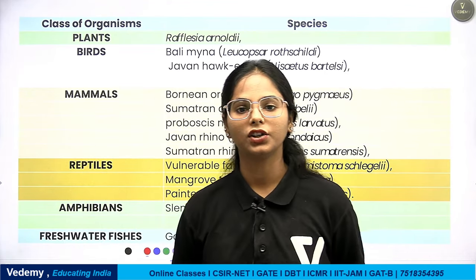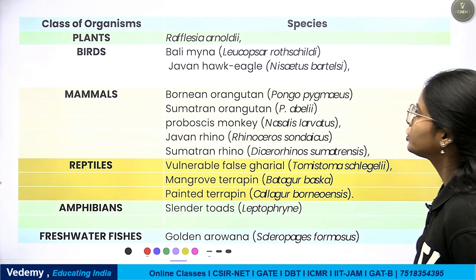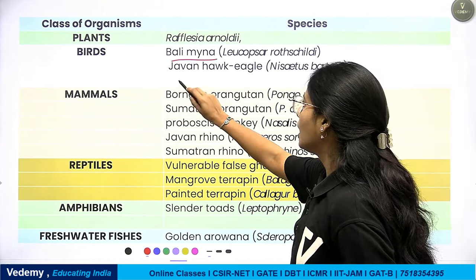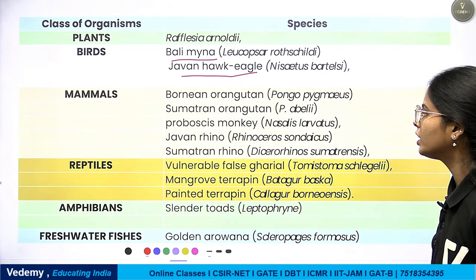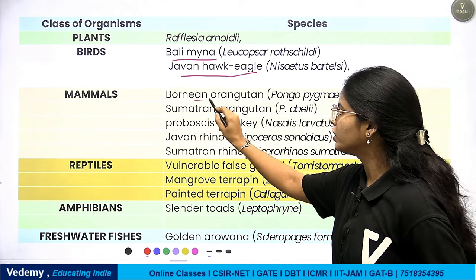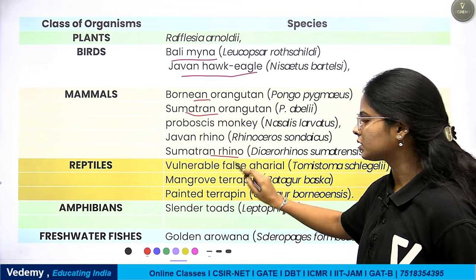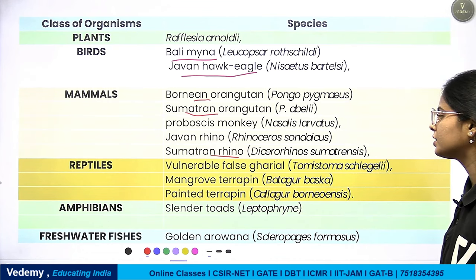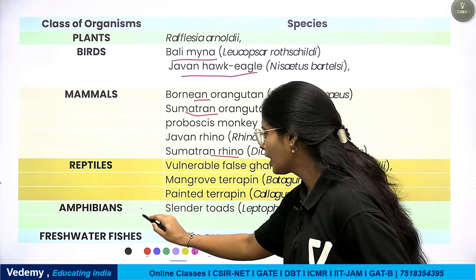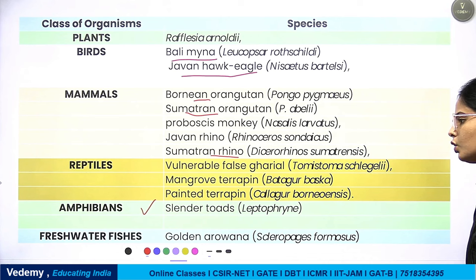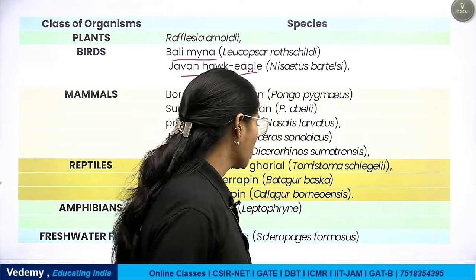For Sundaland, talking about species diversity: iconic plant species include Rafflesia arnoldii. Iconic bird species include Bali myna and Javan hawk-eagle. Iconic mammals include Bornean and Sumatran orangutan, proboscis monkey, Javan rhino, and Sumatran rhino. Iconic reptiles include terrapins. Iconic amphibians include slender toads, and iconic freshwater fish include the golden arowana.